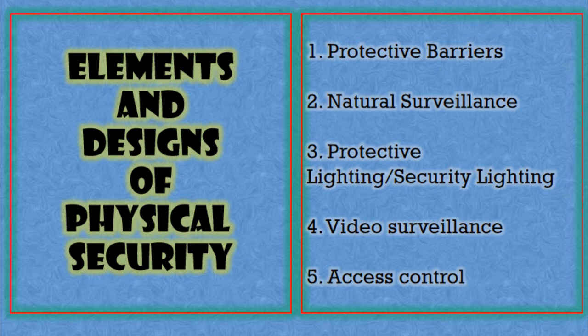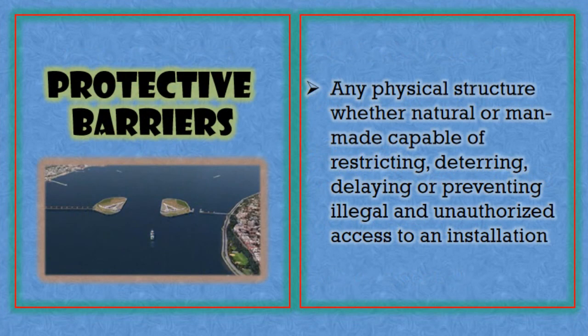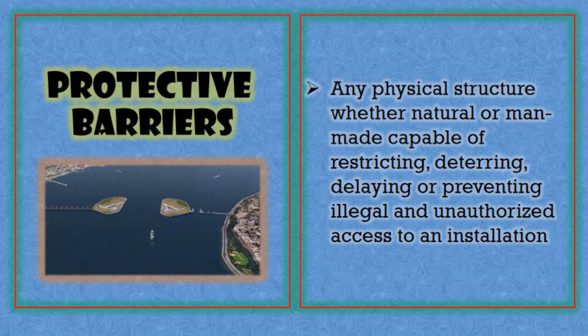Let us talk about protective barriers. The definition: any physical structure, whether natural or man-made, capable of restricting, deterring, delaying, or preventing illegal and unauthorized access to an installation. Let us look at an example in the picture. As you can see, a natural barrier was used — bodies of water were used as a barrier in that certain place.